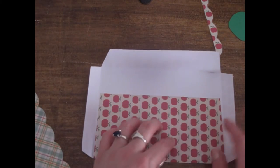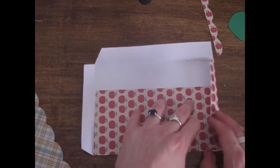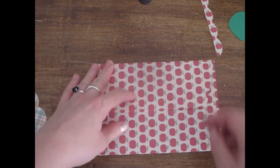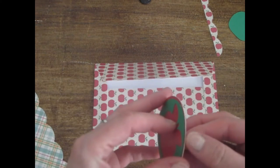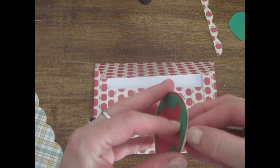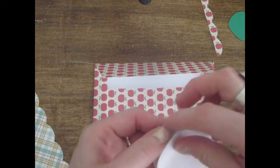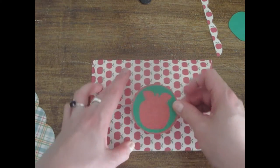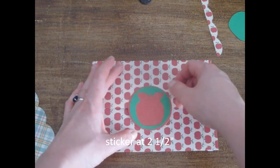So again, the envelope found on page 66. I've already gone ahead and pre-scored, and this is cut at six and three quarters, and I'm also going to go ahead and put the sticker on as well. The sticker today I cut at two and a half inches, and I'm just going to put that right there.